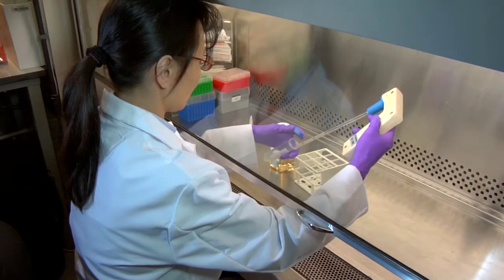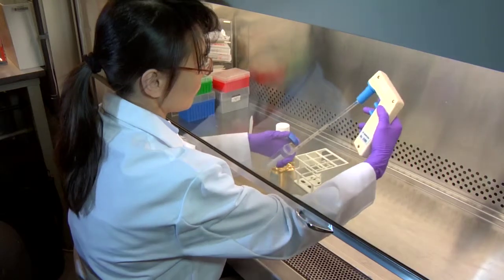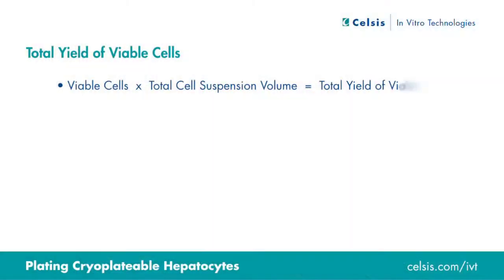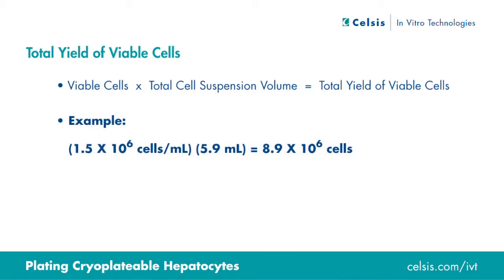Now we measure the remaining volume of cell suspension with a serological pipette to get an accurate volume measurement. Theoretically, the volume of cell suspension remaining would be 5.9 milliliters. To determine the total viable cell yield, the cell concentration of 1.5 times 10 to the 6 cells per milliliter is multiplied by 5.9 milliliters for a total cell yield of 8.9 times 10 to the 6 cells.